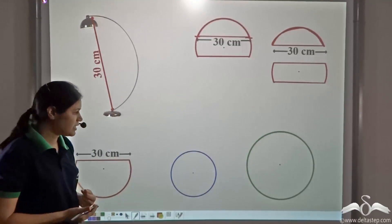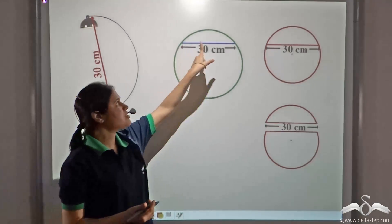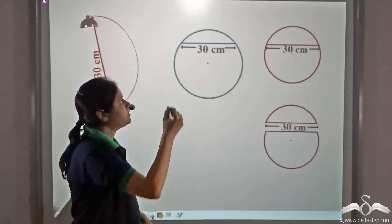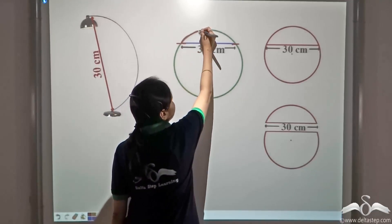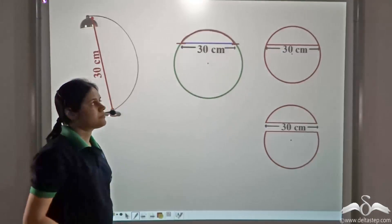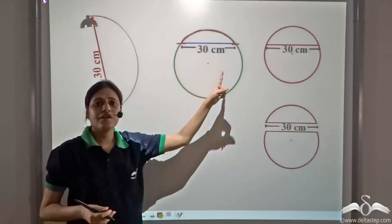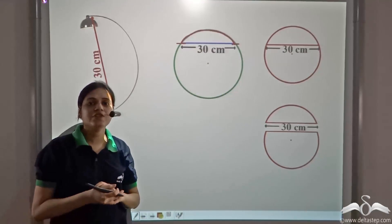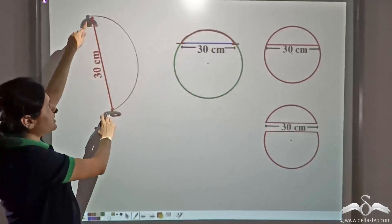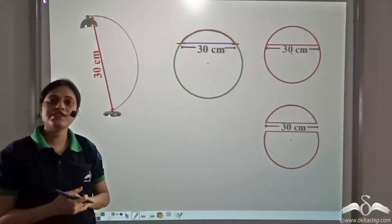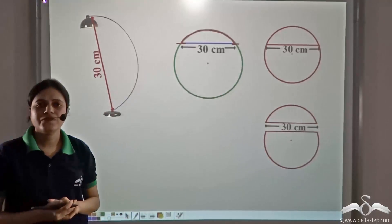Next, he takes another circular coil with a different radius, measures 30 centimeters, and makes a cut. But to his surprise, he sees that this arc is not identical to the previous two arcs — although the chord distance is still 30 centimeters, this arc is not the same as the arcs from the first coil. How is it so?